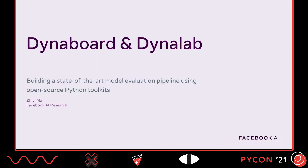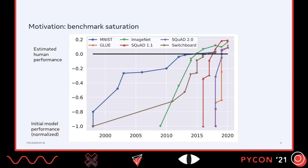Next, I will be talking about our project on DynaBoard and DynaLab. This is specifically about building a state-of-the-art model evaluation pipeline using open-source Python toolkits. First of all, let me motivate the reason behind this project. As we all know, there are multiple benchmarks in the market, which are very important components for the research community to compare performance and make advances.